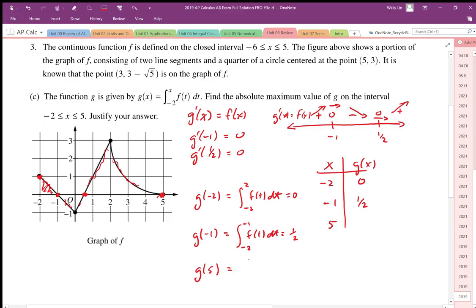And then g of 5 is going to be the area from negative 2 to positive 5 of f of t dt and we've already worked that out. That area we've worked out to be from negative 2 to positive 5, it looked like,